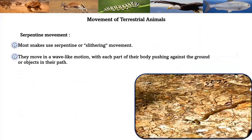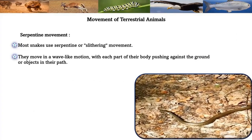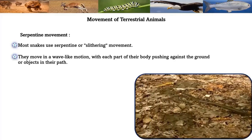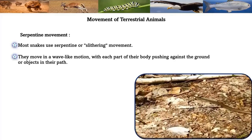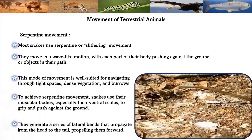Special types of movement in terrestrial habitats — serpentine movement: most snakes use serpentine or slithering movement. They move in a wave-like motion, with each part of their body pushing against the ground or objects in their path. This mode of movement is well suited for navigating tight spaces, dense vegetation, and burrows. Snakes use their muscular bodies, especially their ventral scales, to grip and push against the ground, generating lateral bends that propagate from head to tail, propelling them forward.